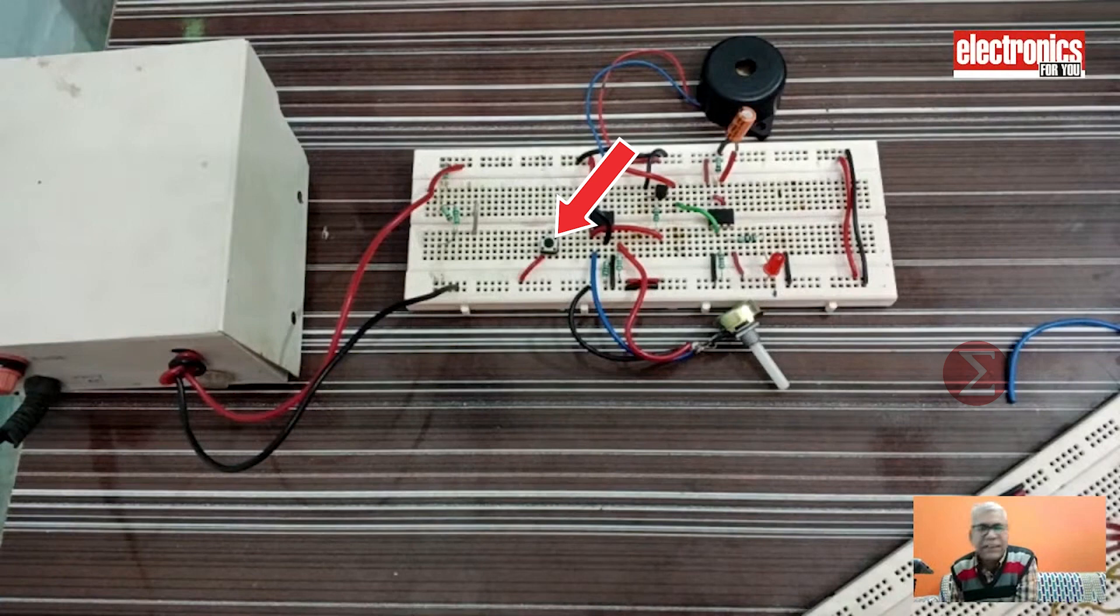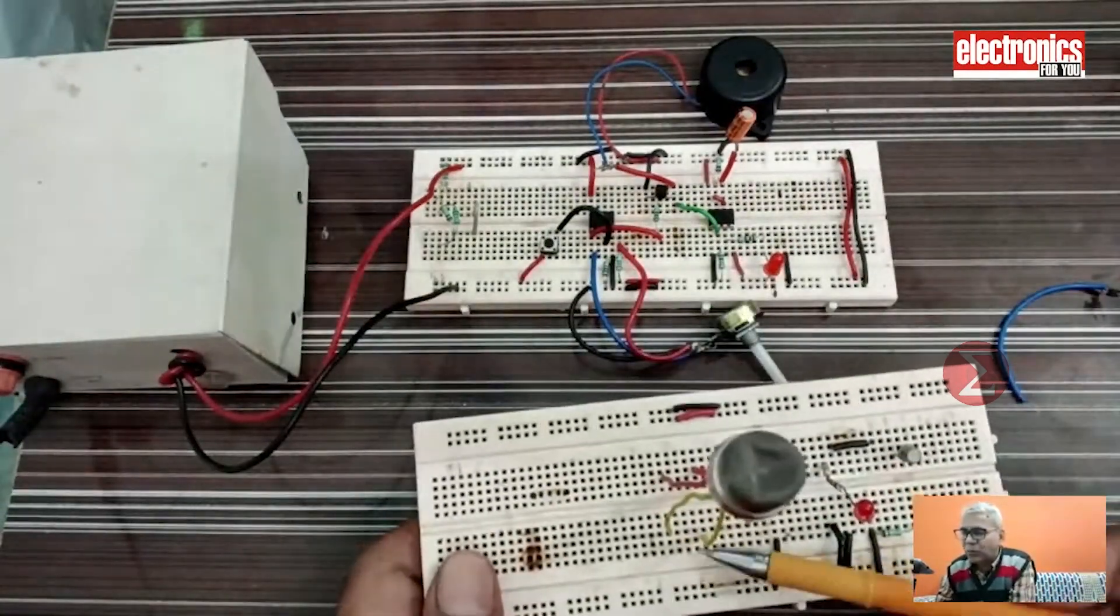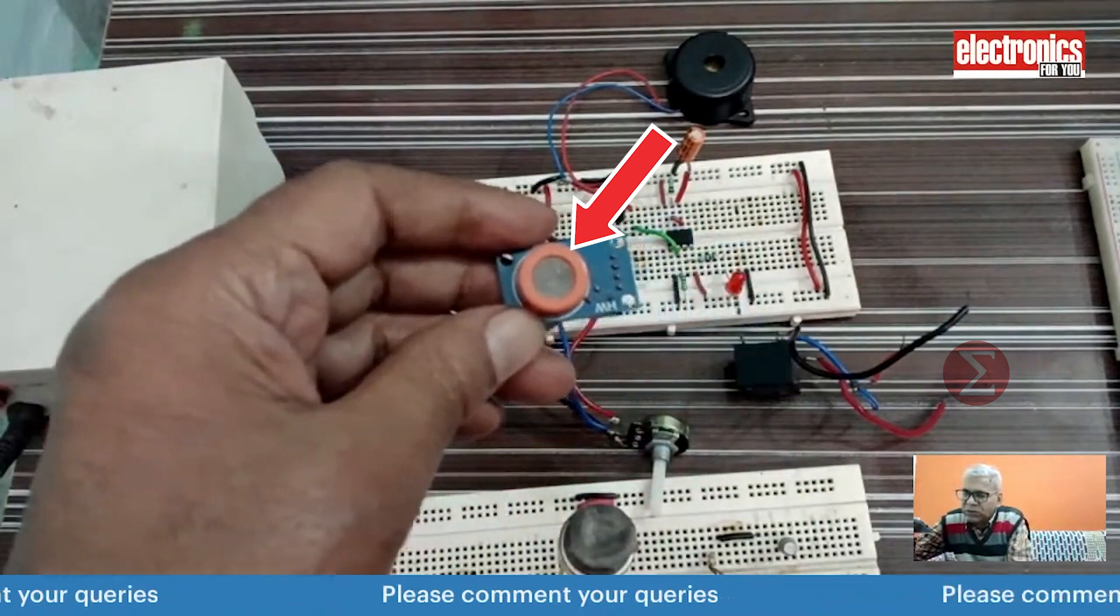I have also created a circuit using the MQ2 sensor here on the breadboard. You can also use a gas sensor module in place of this component. You have to install this in your kitchen.